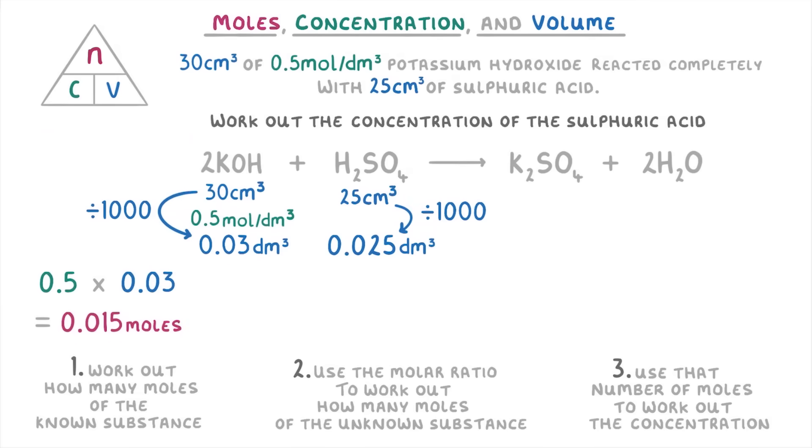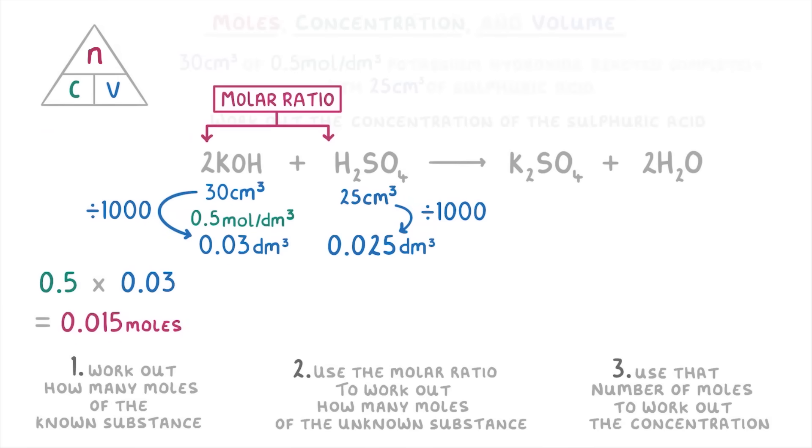Then for our second step, we need to find the molar ratio between potassium hydroxide and sulfuric acid, which we can do by looking at the numbers in front of each of them. And remember that if there isn't a number before the substance, like for the sulfuric acid, then we just read it as a 1. So the molar ratio here is 2 to 1, which just means that for every 2 moles of potassium hydroxide, we'll have 1 mole of sulfuric acid.